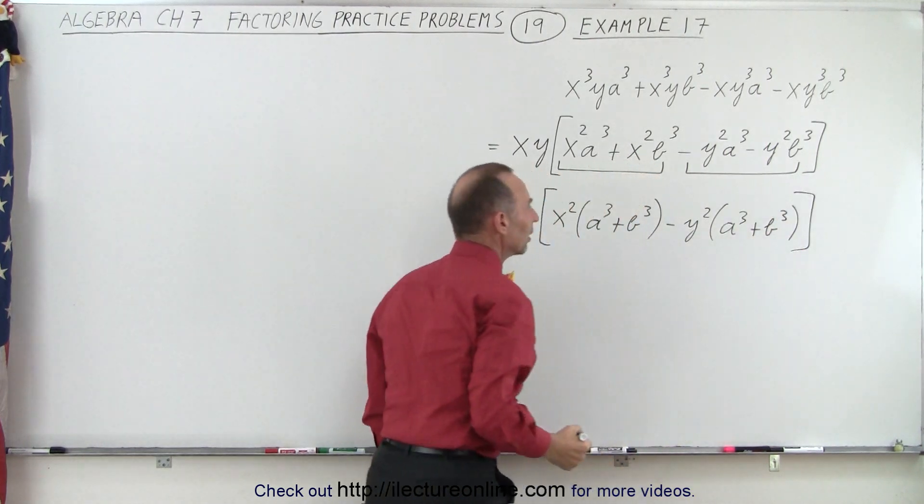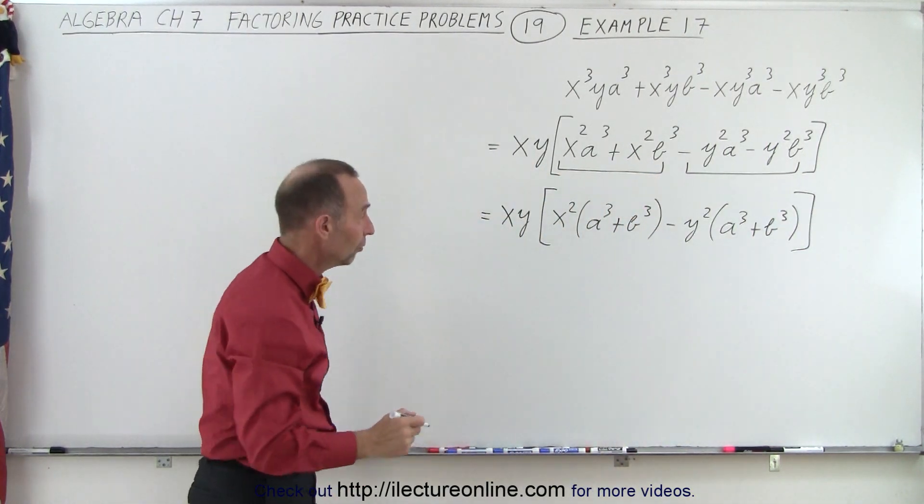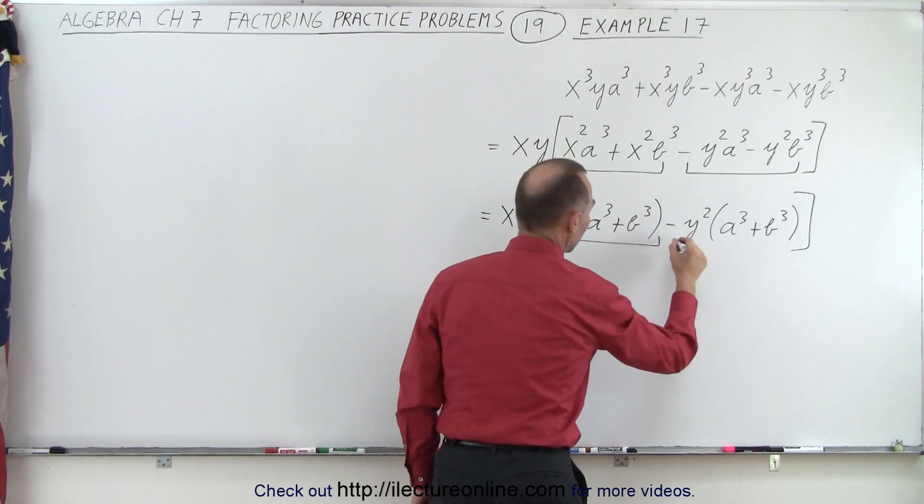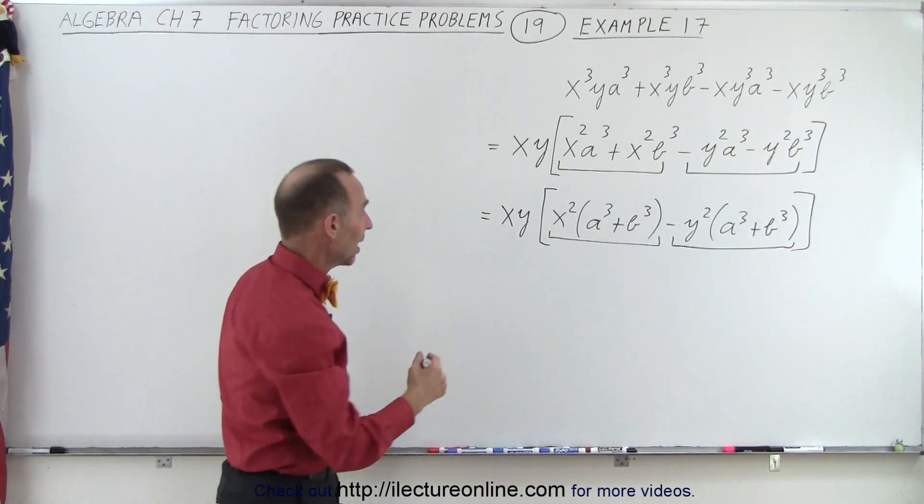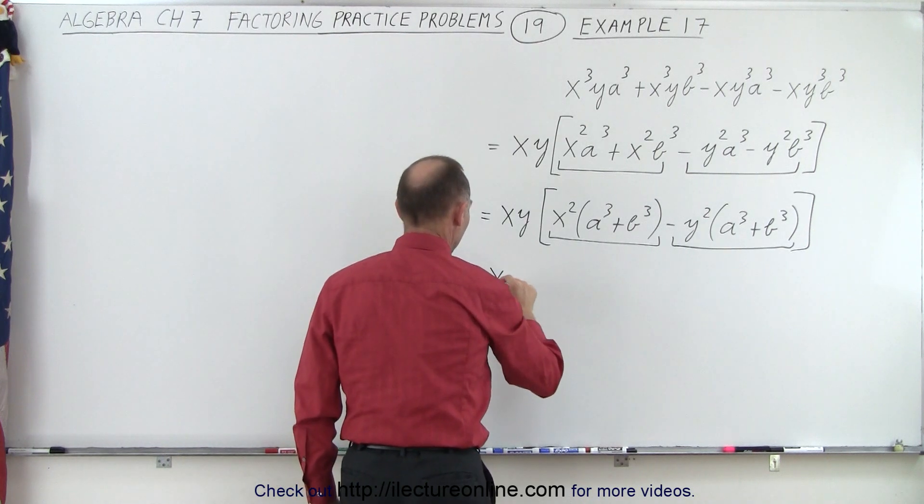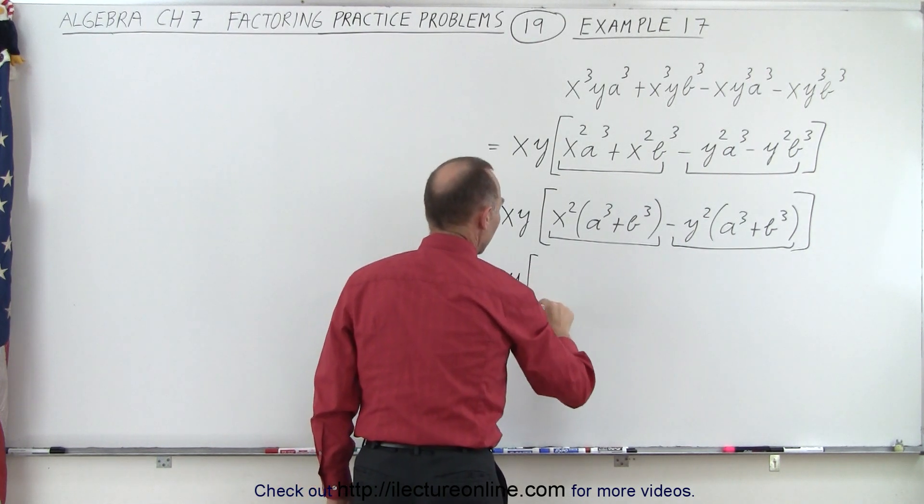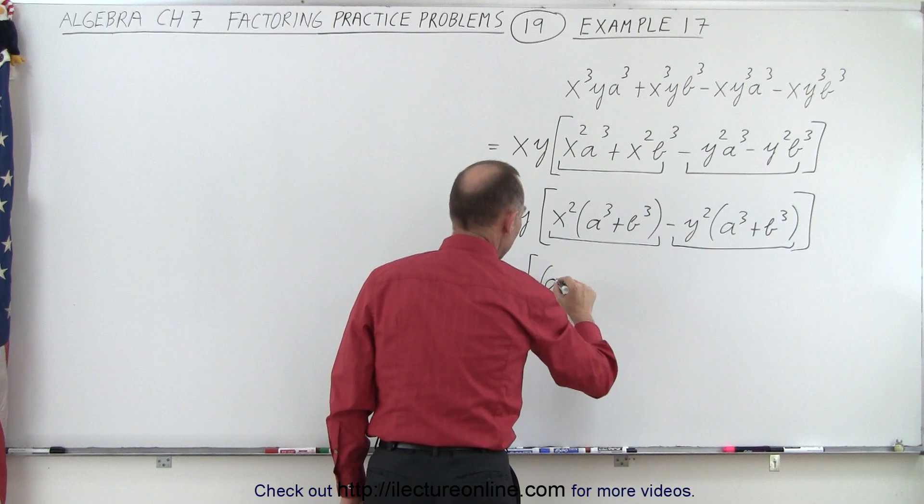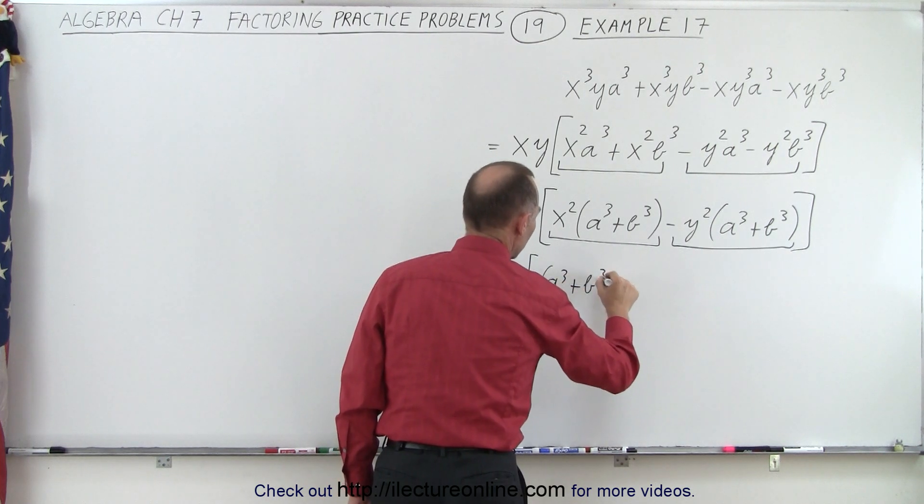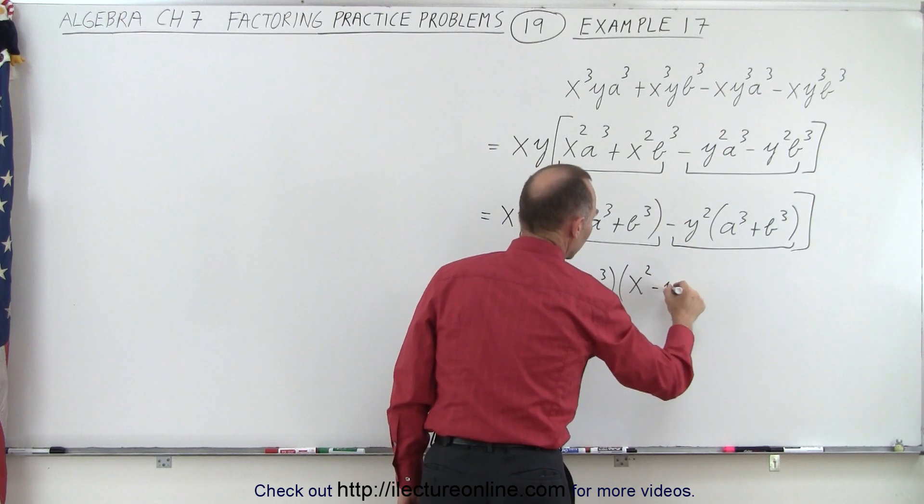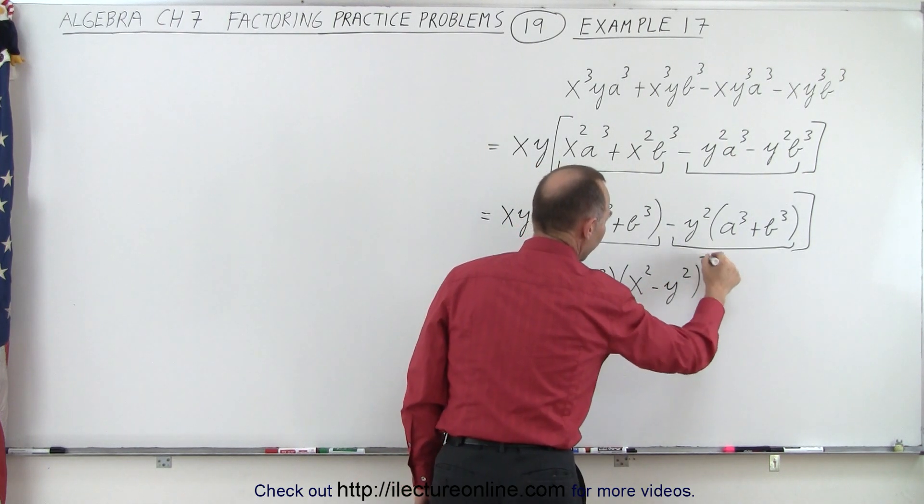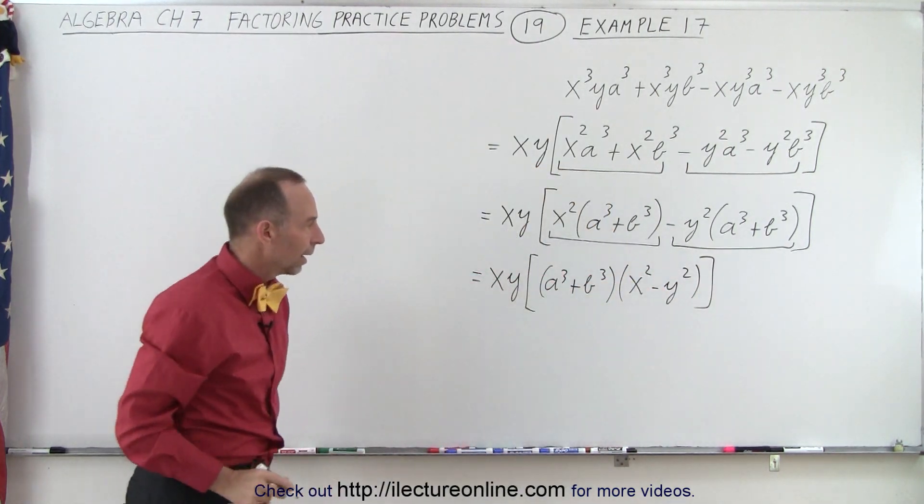And now things are beginning to look a little bit better, because notice these two terms in here each contain an a cubed plus b cubed, which can be factored out. So this is equal to x times y, and we factor out an a cubed plus b cubed. And then here we have remaining an x squared minus a y squared. All right.